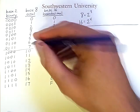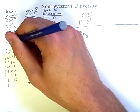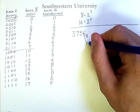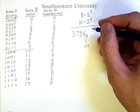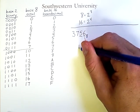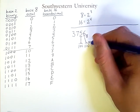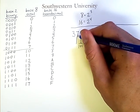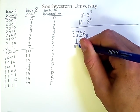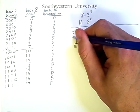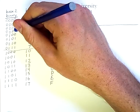So, 6 corresponds to the 3-digit binary number 1, 1, 0. 5 corresponds to the 3-digit binary number 1, 0, 1. 7 corresponds to the 3-digit binary number 1, 1, 1. And 3 corresponds to the 3-digit binary number 0, 1, 1.